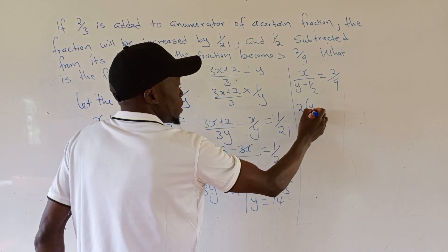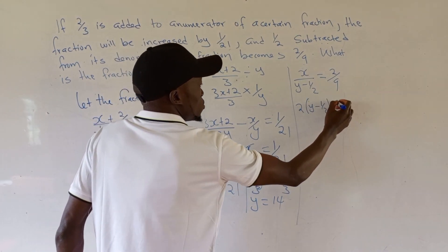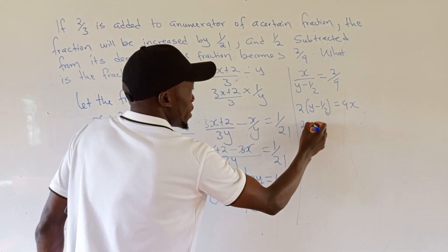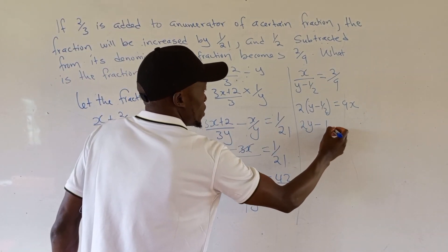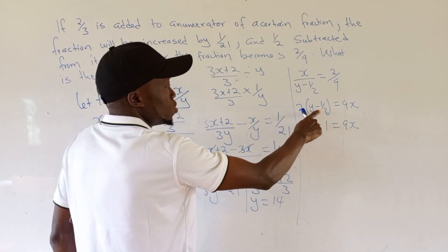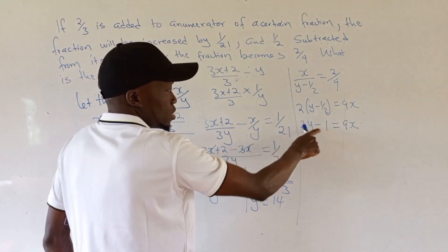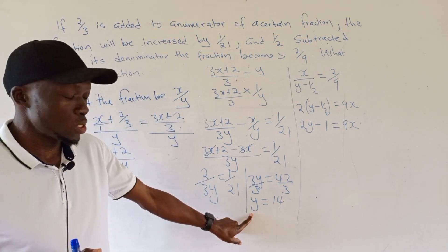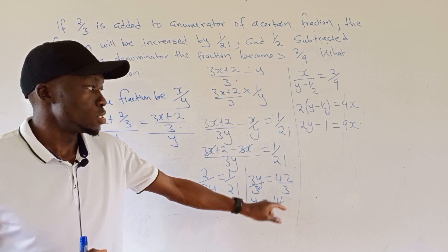Cross-multiplying: 2 times (y - 1/2) equals 9x. Simplifying: 2y - 1 = 9x, because 2 times 1/2 is 1. We've found that y is 14.